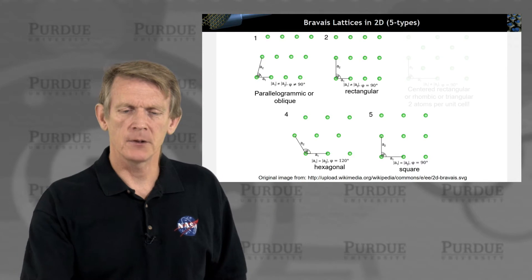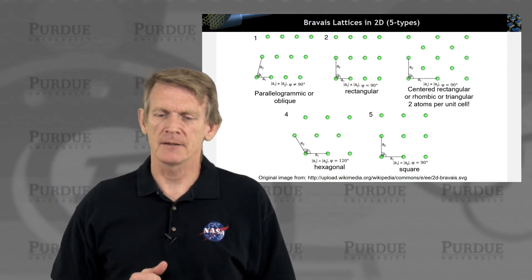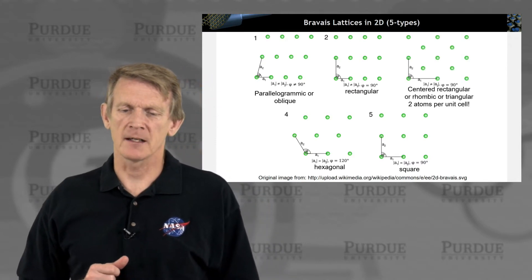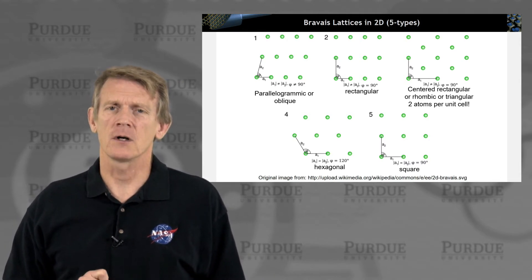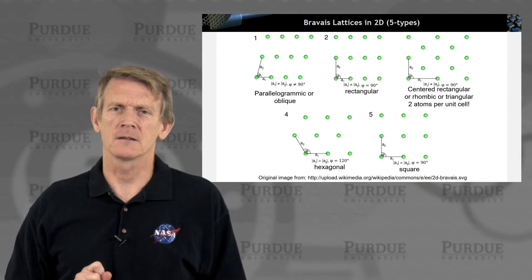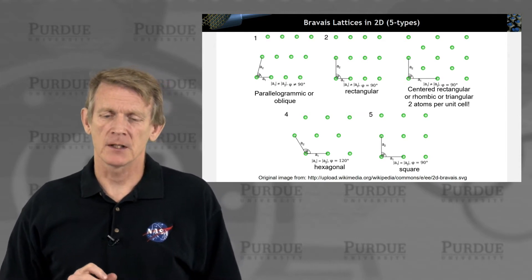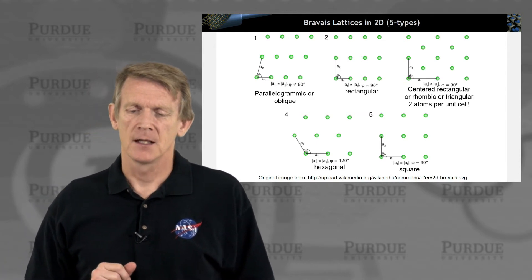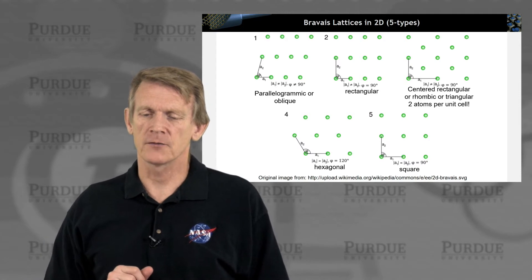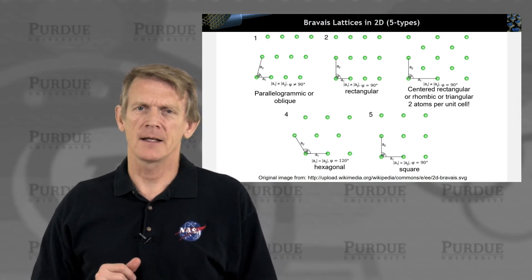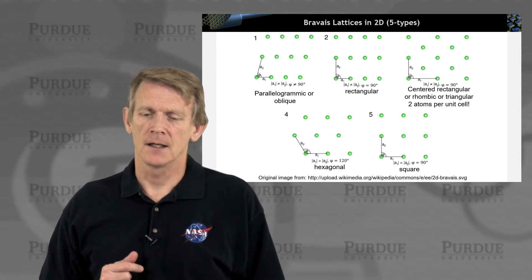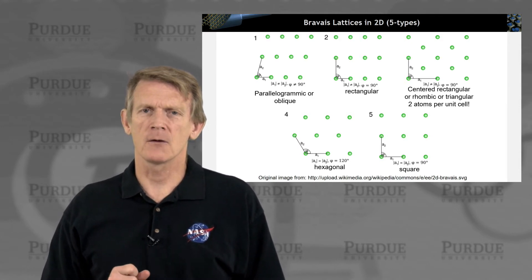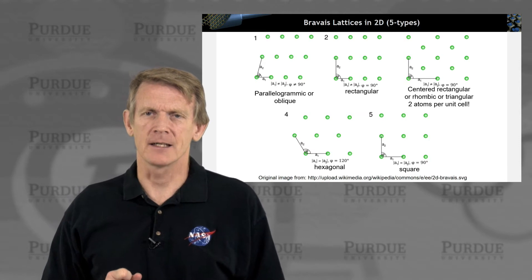There's one example in the family of 2D Bravais lattices that has two atoms per unit cell, and that's the centered rectangular or rhombohedral or triangular cell. So this one has two atoms. A1 and A2 have a different length, and they have an atom in the middle of the cell. And the angle between A1 and A2 is 90 degrees.